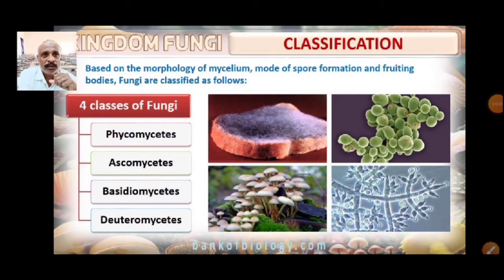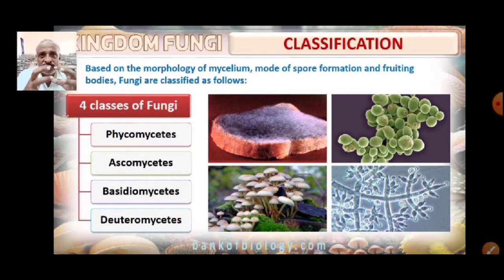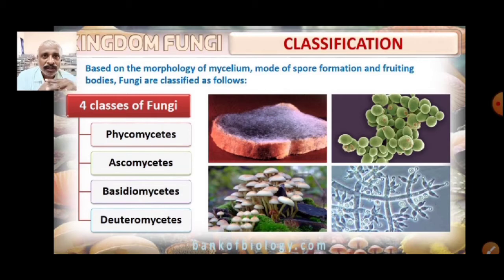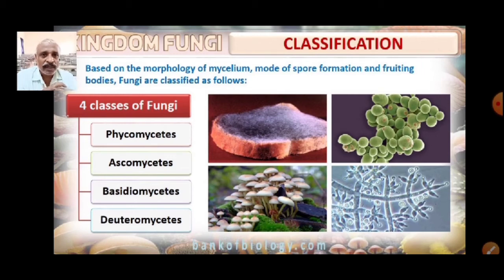Based on the morphology of that mycelium — it is very clear, I hope, that it is a network of hyphae. We are classifying fungi based on the mycelium, its mode of formation, and fruiting body formation. The fungi are classified into four groups or four classes: Phycomycetes, Ascomycetes, Basidiomycetes, and Deuteromycetes.